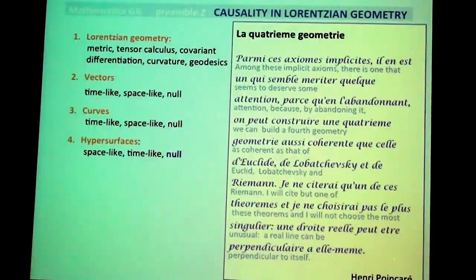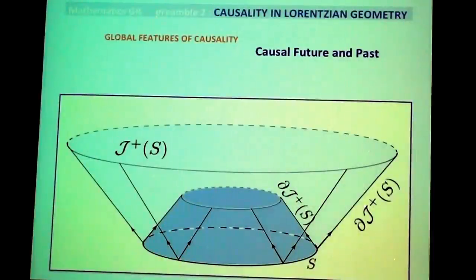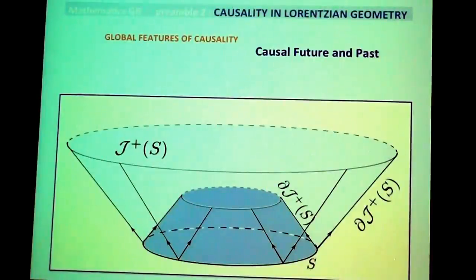Null geodesics are extremely important — these are geodesics which are null at every point. Once you have these local considerations, you can also go to global considerations. The simplest global consideration is time orientation: you can pick a global vector field on your manifold which is time-like at every point, and that gives you a notion of past and future, so you have past-oriented and future-oriented curves.